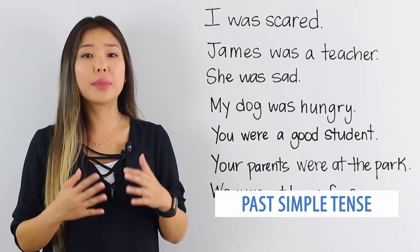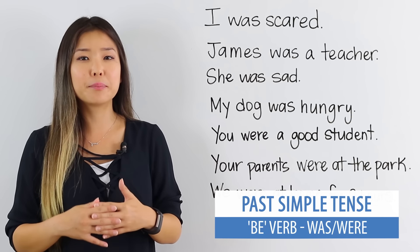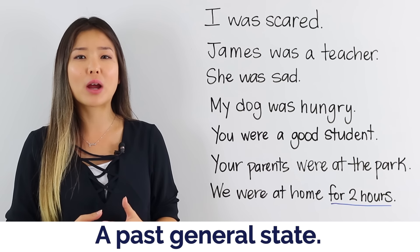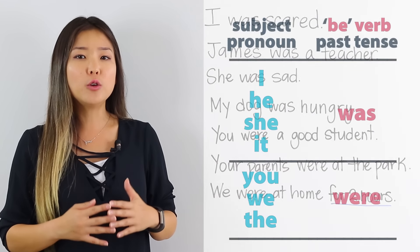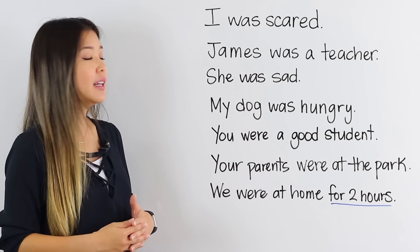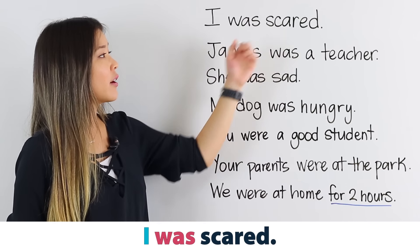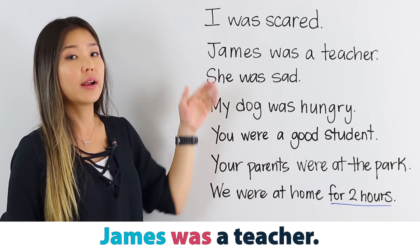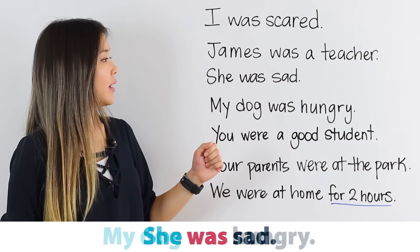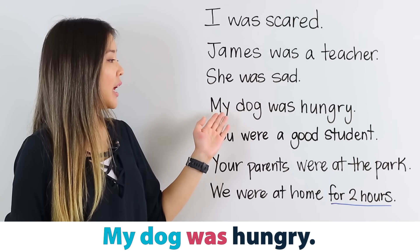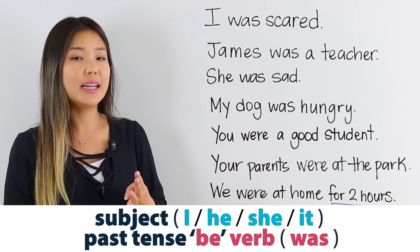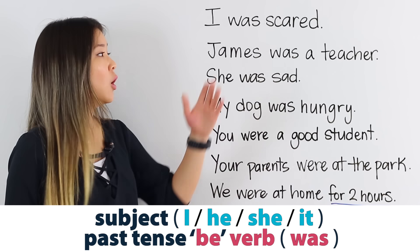In this video, I will talk about the be verb in the past simple tense. The be verb in the past simple tense can be used to describe a past general state. We use the be verbs 'was' and 'were' in this tense. Take a look at the examples: I was scared. James, or he, was a teacher. She was sad. My dog was hungry. For I, he, she, and it, we use the past tense be verb 'was'.